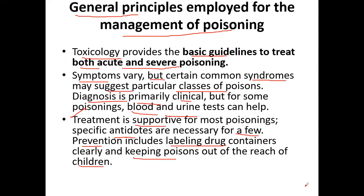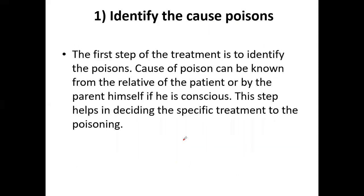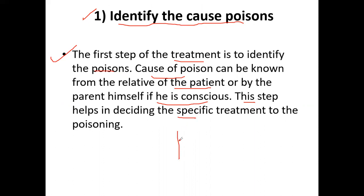The first step of treatment is to identify the cause of the poison, which can be obtained from the patient if conscious. This step helps in deciding the specific treatment — for example, if the patient has organophosphate poisoning, the antidote is atropine, which decreases the cholinergic crisis. Then every conservative approach is used to manage the patient accordingly.